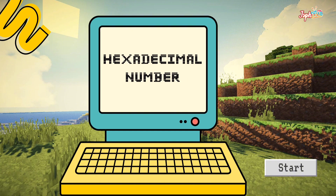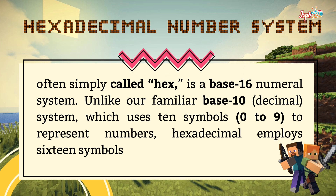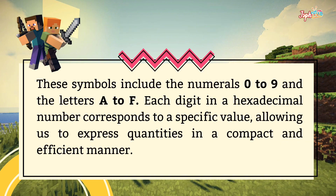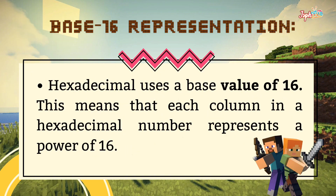Lastly, the hexadecimal number. Often simply called hex, it is a base-16 numeral system. Unlike our familiar base-10 system which uses 10 symbols (0 to 9) to represent numbers, hexadecimal employs 16 symbols. These symbols include the numerals 0 to 9 and the letters A to F. Each digit in a hexadecimal number corresponds to a specific value, allowing us to express quantities in a compact and efficient manner. Hexadecimal uses a base value of 16, meaning each column represents a power of 16.